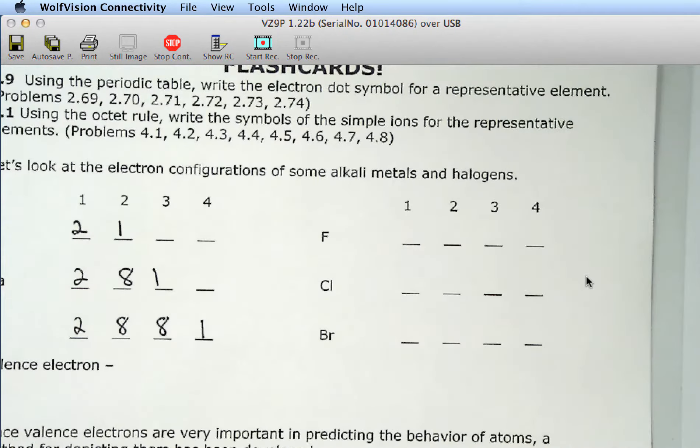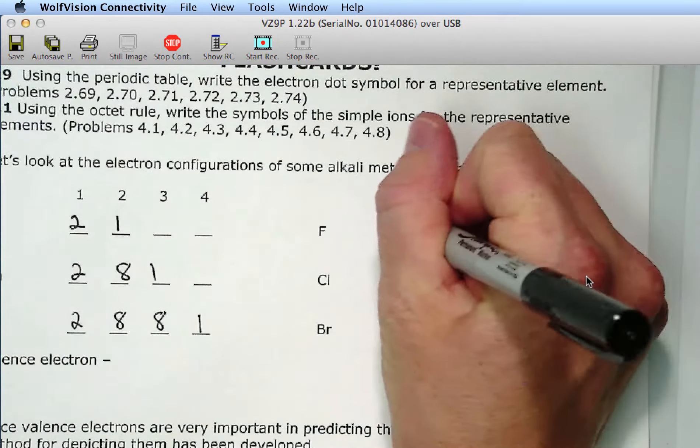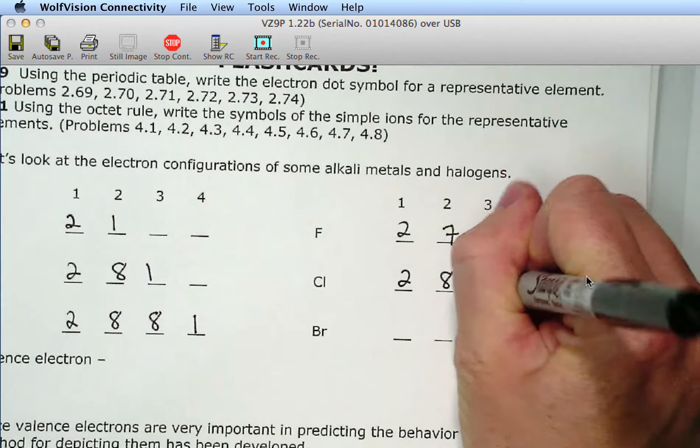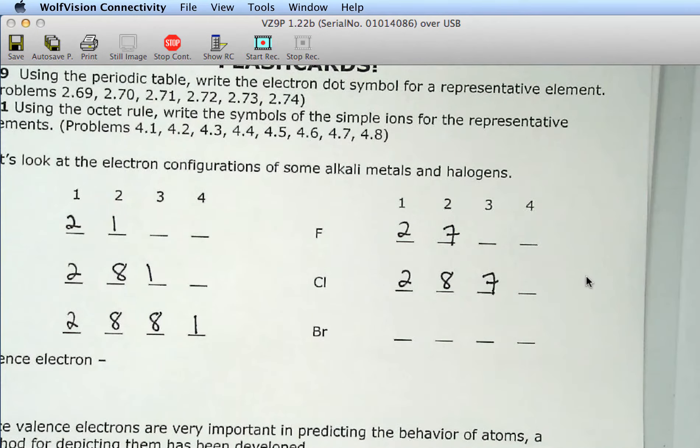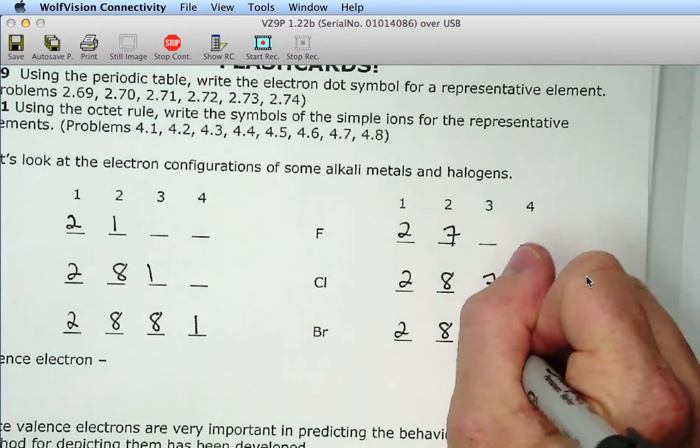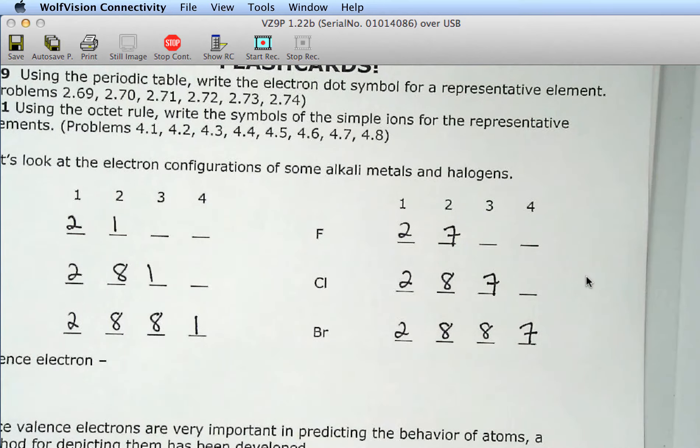And then fluorine. 2, 7. Chlorine. 2, 8, 7. Now bromine, technically we didn't ask you to do bromine because bromine is past atomic number 20. So if you look at bromine you're like, what is she asking? That's fine. The configuration for bromine is 2, 8, 8, 7. And if that doesn't make sense to you, don't worry about it because we will never have a question about the electron configuration above atomic number 20.